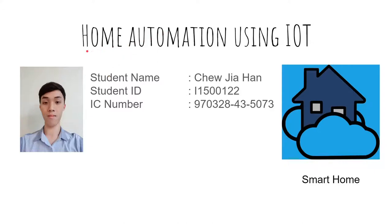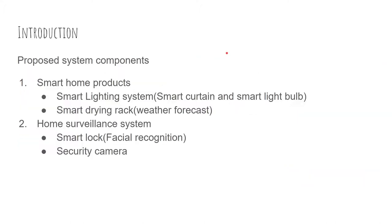Hi, my name is Yuja Han and the title for this presentation will be Home Automation using IoT. In the proposed system, there are two main components. The first one is Smart Home System or Products, and the second one will be Home Surveillance System or Home Security System.